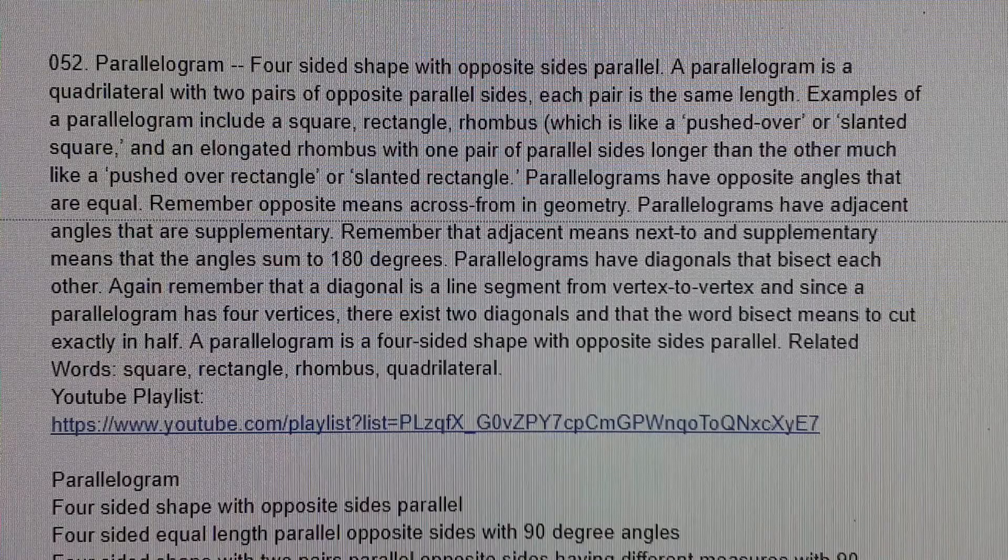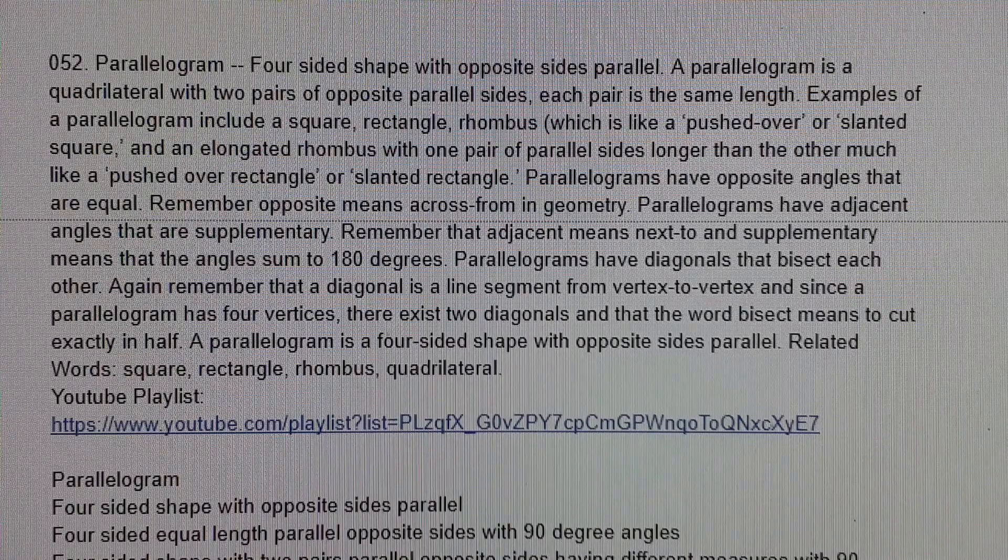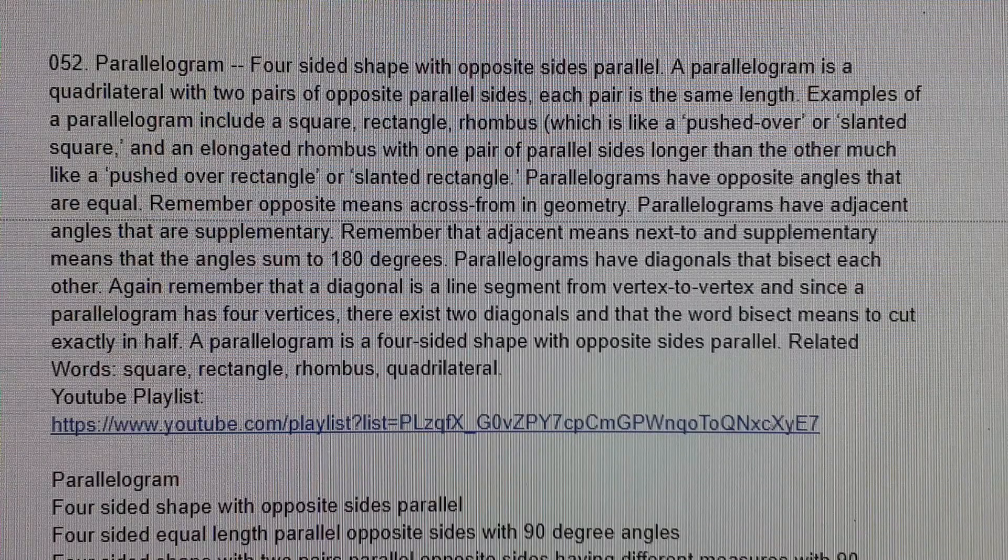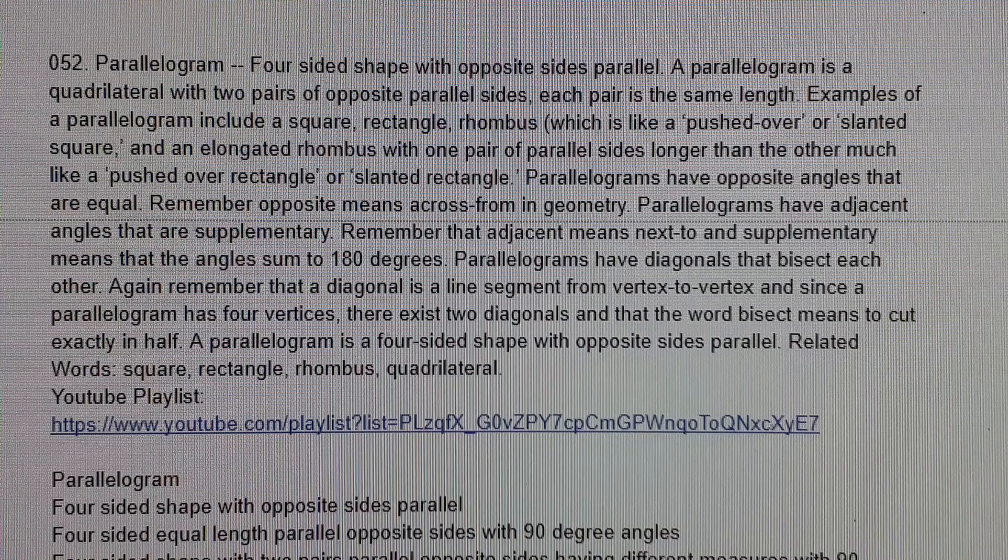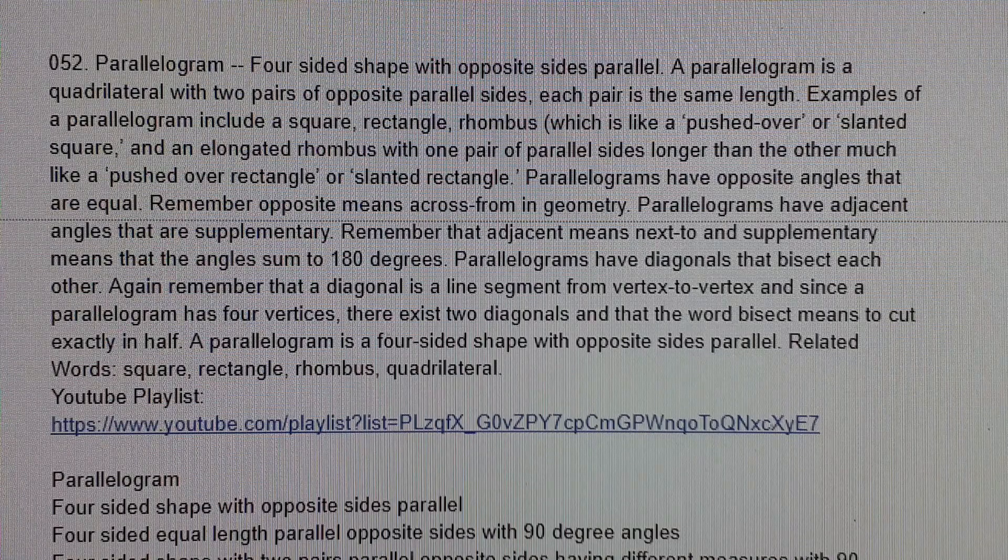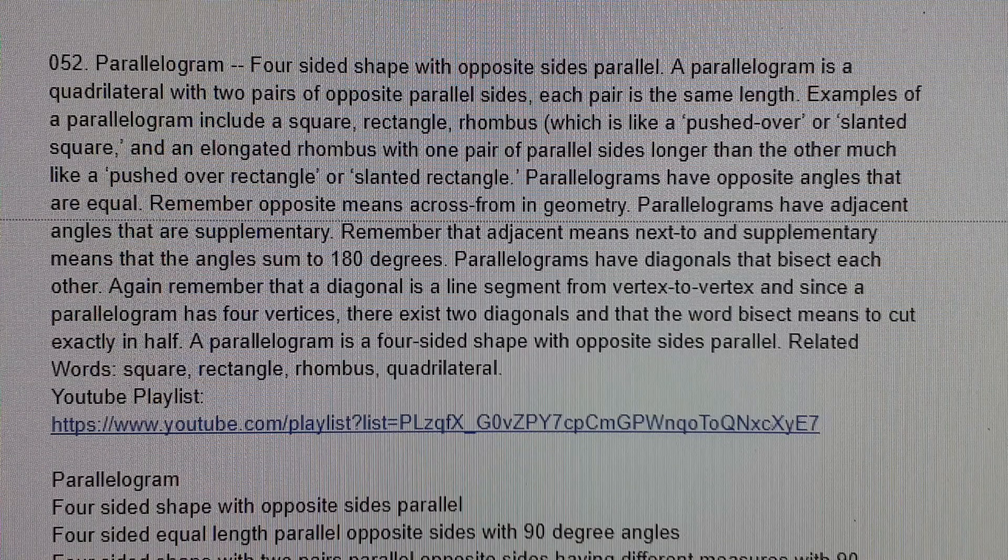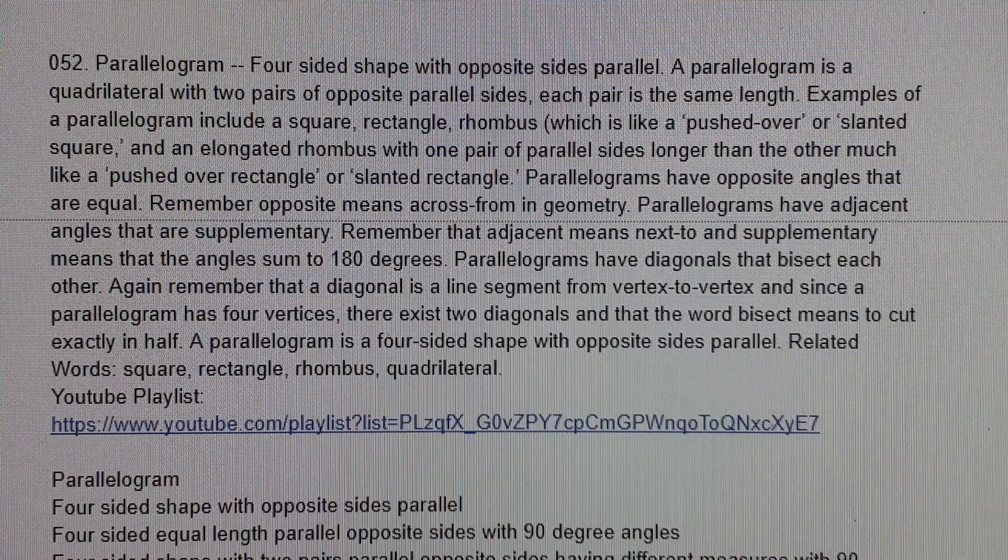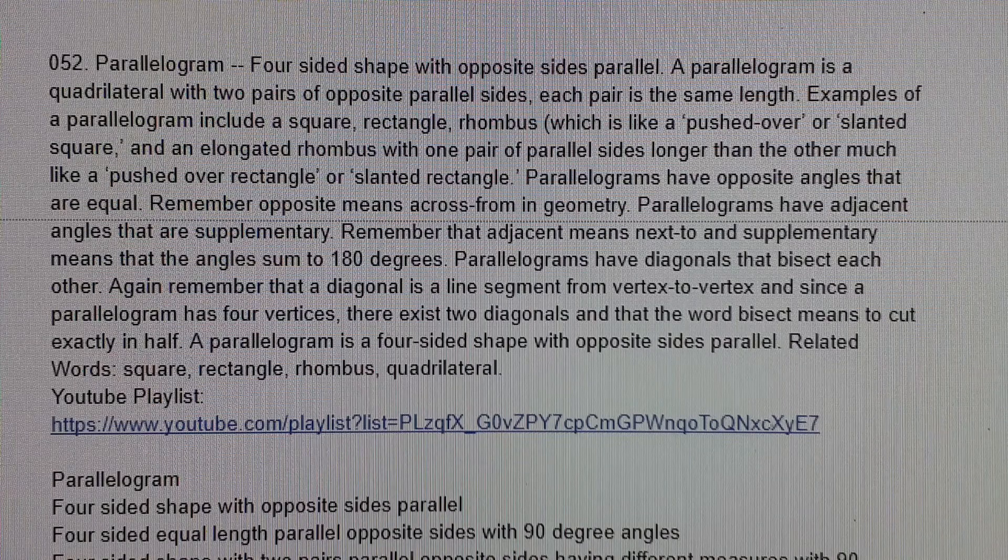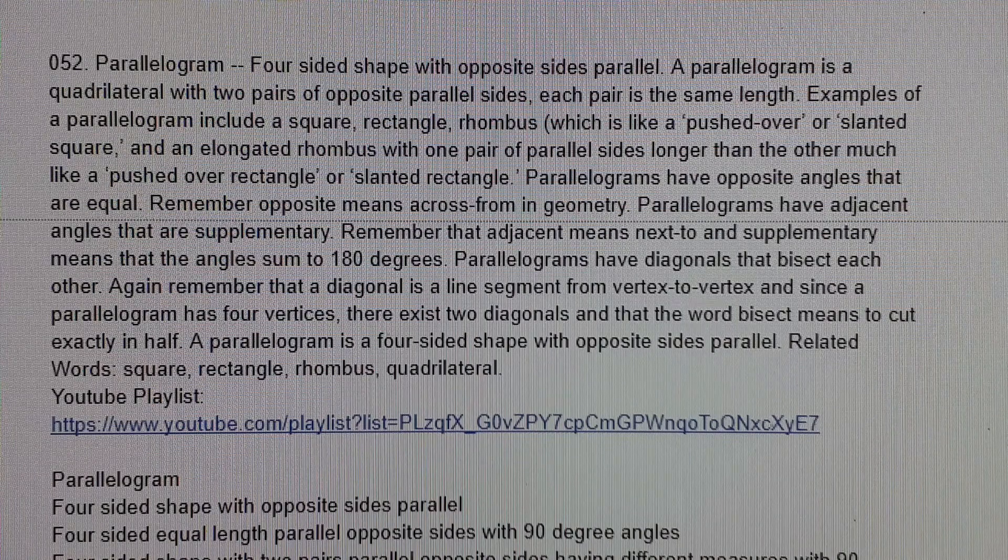Parallelograms have diagonals that bisect each other. Again, remember that a diagonal is a line segment from vertex to vertex, and since a parallelogram has four vertices, there exist two diagonals, and that the word bisect means to cut exactly in half.